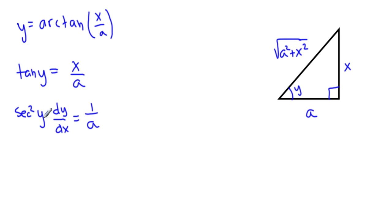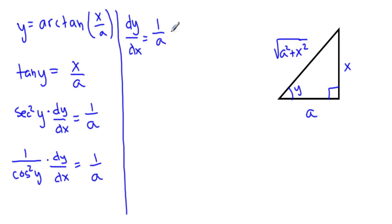So now, secant squared is 1 over cosine. So I'll write this as 1 over cosine squared of y times dy over dx equals 1 over a. And multiply both sides by cosine squared. I'm left with dy over dx equals 1 over a cosine squared of y.